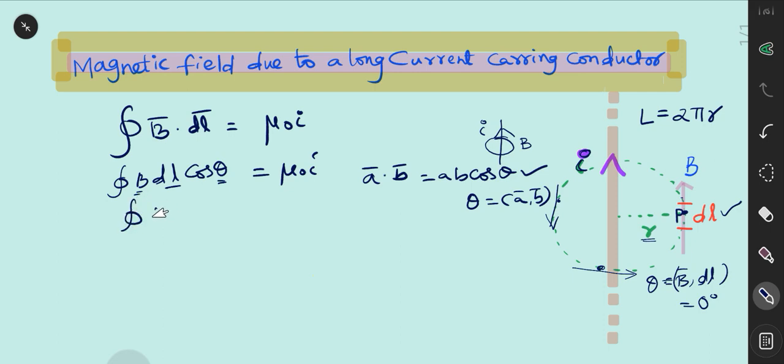So, we can write closed integral of B·dL is equal to μ₀I, since cos 0 is 1. By moving B away from the integral, we can write B times closed integral of dL is equal to μ₀I.